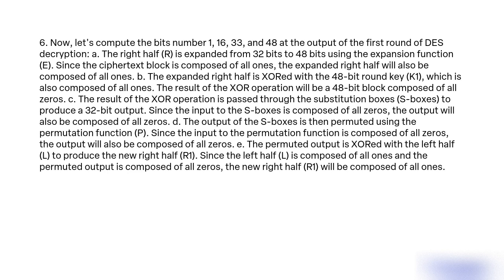C: The result of the XOR operation is passed through the S-boxes to produce a 32-bit output. Since the input to the S-boxes is composed of all zeros, the output will also be composed of all zeros. D: The output of the S-boxes is then permuted using the permutation function P. Since the input to the permutation function is composed of all zeros, the output will also be composed of all zeros. E: The permuted output is XORed with the left half L to produce the new right half R1. Since the left half L is composed of all ones and the permuted output is composed of all zeros, the new right half R1 will be composed of all ones.